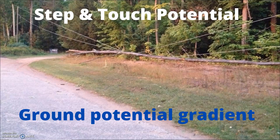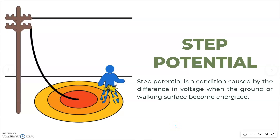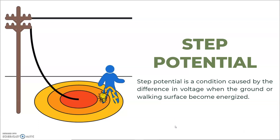Step potential is a condition caused by the difference in voltage when the ground or working surface becomes energized — this could be from a downed power line, a fault in underground equipment, etc. The point where the line touches the ground has the highest voltage, and as we move away from this source, the voltage drops depending on the conductivity of the surface. With step potential, your leading leg is at a higher voltage than the back leg, and if your legs cross the electricity will move through the body to complete the circuit from higher voltage to lower voltage, and you will experience a shock.